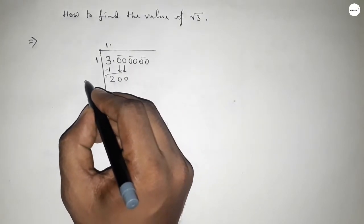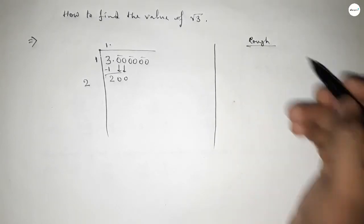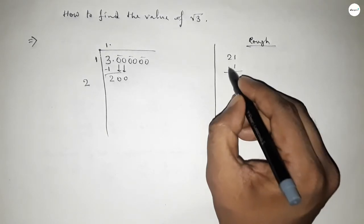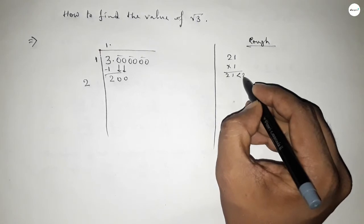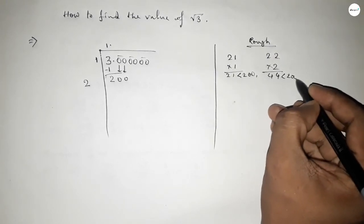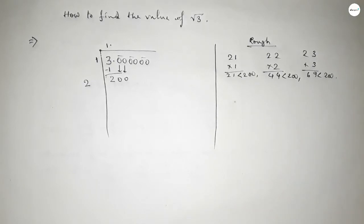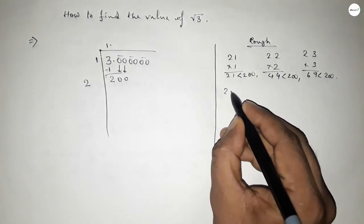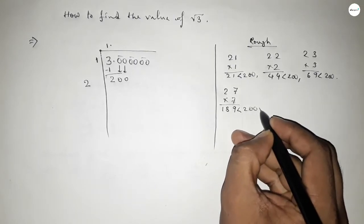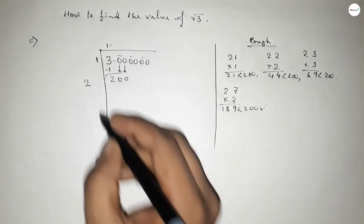Taking the double of 1, so double of 1 equals 2. Now what should we put beside 2 to get a product almost near to 200? If we put 1 then 21×1=21, which is less than 200 but not almost near. If we put 2 then 22×2=44, still not near enough. If we put 7 then 27×7=189, which is almost near to 200.